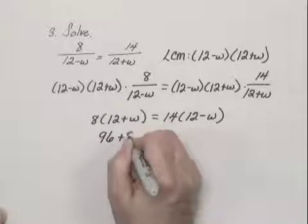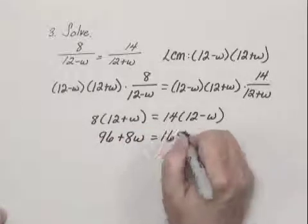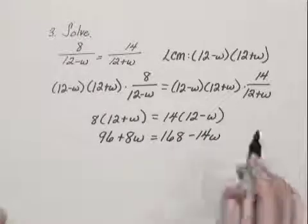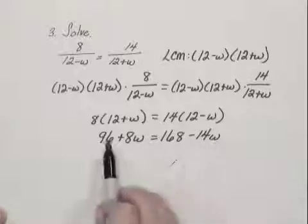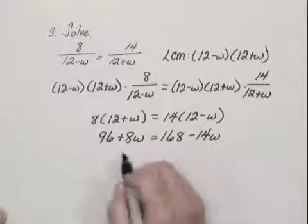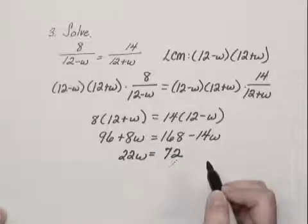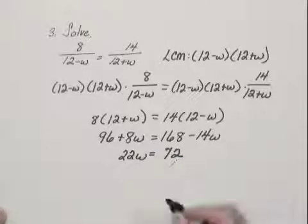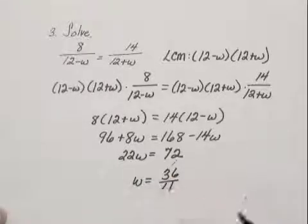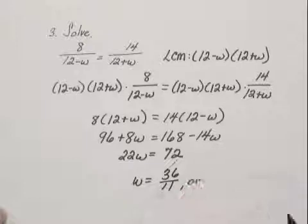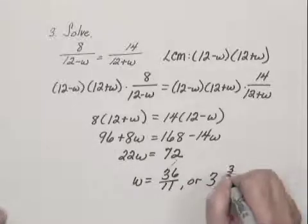Then we multiply, we have 96 plus 8w equals 168 minus 14w. We add 14w to both sides and subtract 96 from both sides. We get 22w equals 72. Dividing both sides by 22, we get w equals 36 over 11. Or since we're dealing with speed, we might write that as 3 and 3 elevenths.